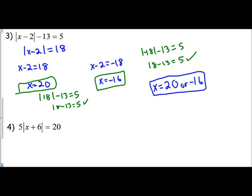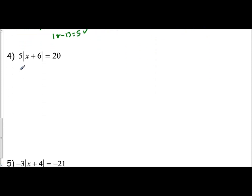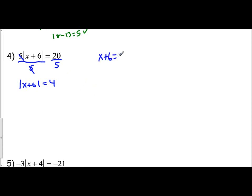Let's look at number four. We have to isolate our absolute values by themselves — be careful here. The absolute value is an operation; it's not the same as parentheses, so you can't distribute the 5. You have to divide it out first to get the absolute value by itself. Dividing gives the absolute value of x plus 6 equals 4. Split into two equations: x plus 6 equals positive 4 and x plus 6 equals negative 4. Subtracting 6 gives x equals negative 2, and x equals negative 10.